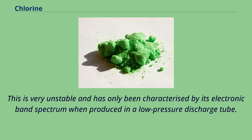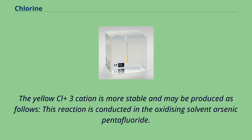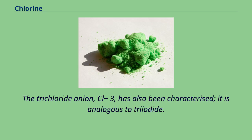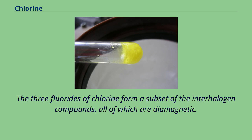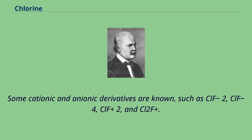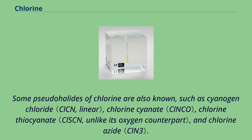The Cl₂⁺ cation has only been characterized by its electronic band spectrum when produced in a low-pressure discharge tube. The yellow Cl₃⁺ cation is more stable and may be produced in the oxidizing solvent arsenic pentafluoride. The trichloride anion, Cl₃⁻, has also been characterized; it is analogous to triiodide. The three fluorides of chlorine form a subset of the interhalogen compounds, all of which are diamagnetic. Some cationic and anionic derivatives are known, such as ClF₂⁺, ClF₄⁻, ClF₂⁻, and Cl₂F⁺. Some pseudohalides of chlorine are also known, such as cyanogen chloride, chlorine cyanate, chlorine thiocyanate, and chlorine azide.